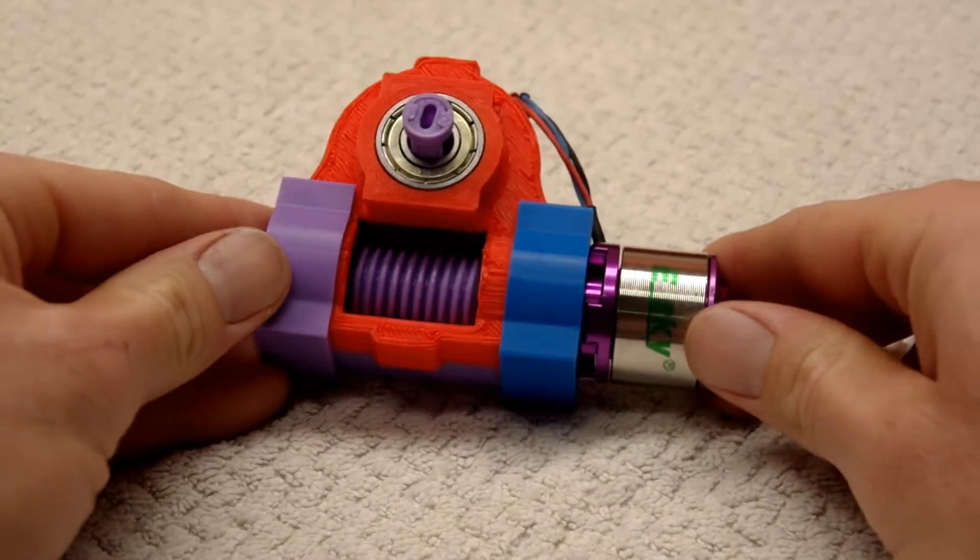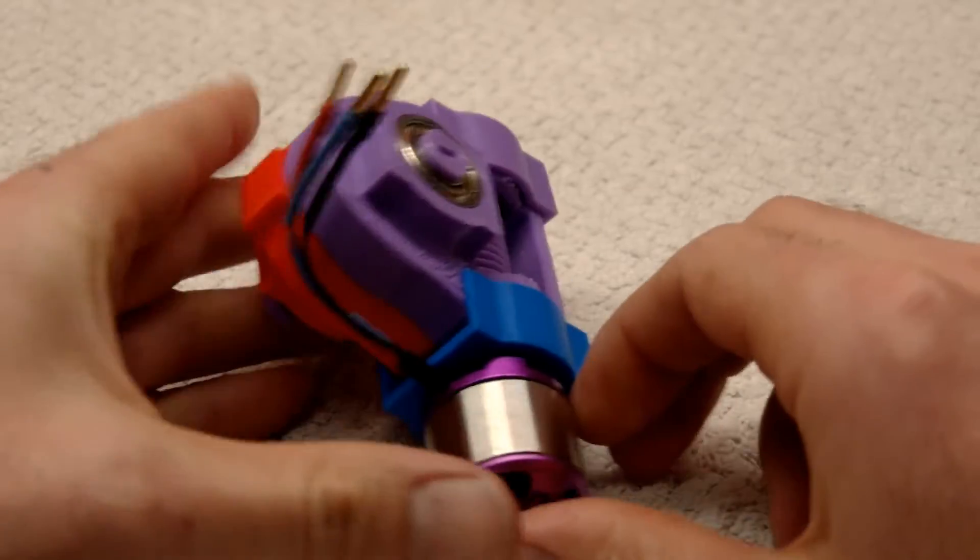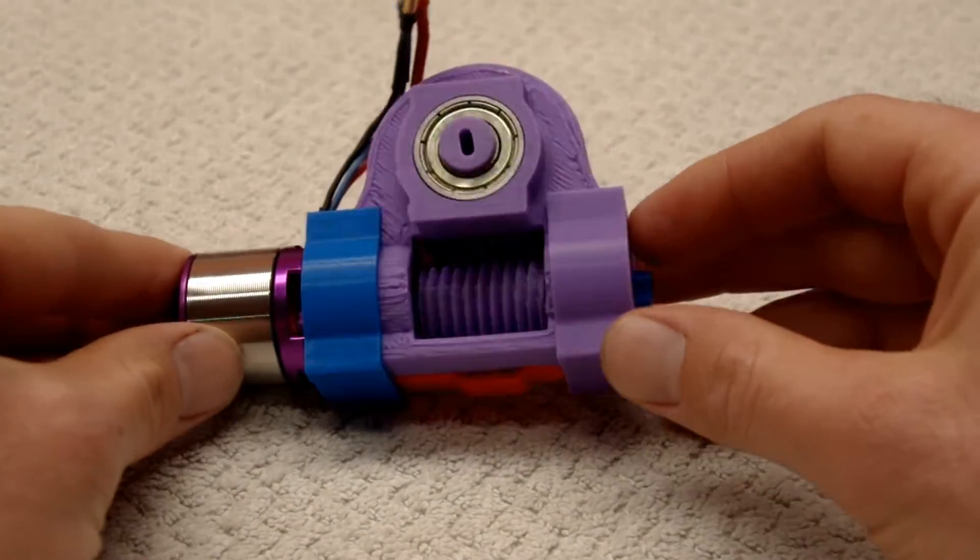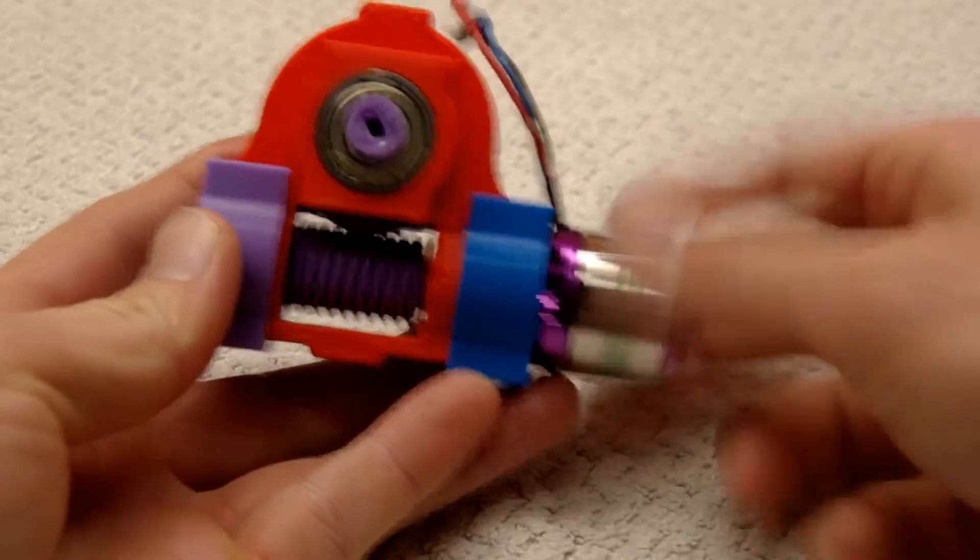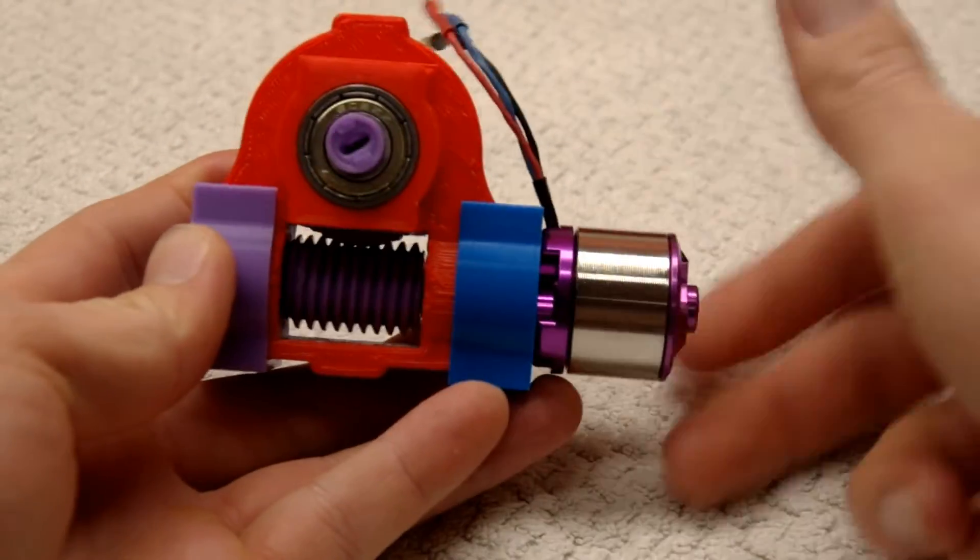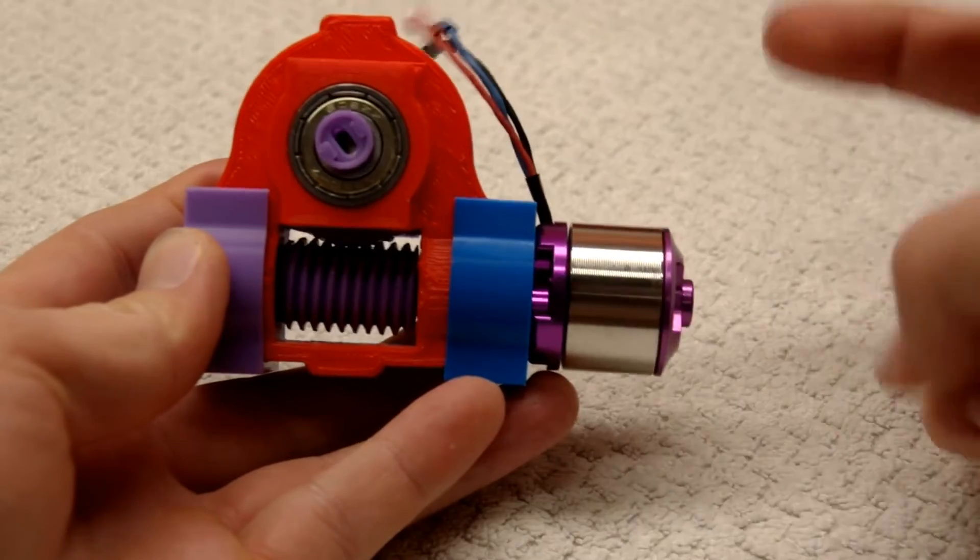I had difficulty printing the actual worm gear due to its large overhanging angles. Using supports wasn't an option because it just left the surface too rough and it was too difficult to clean out. In the end, the teeth never came close to matching the design, so I had to experiment with different tolerances to get it to function properly.